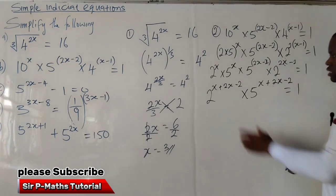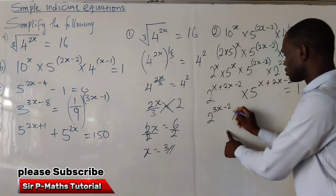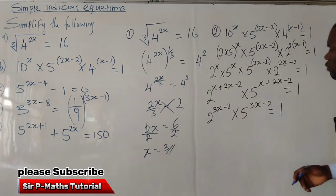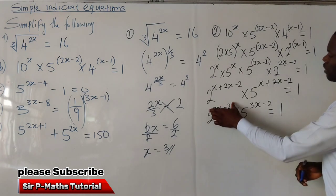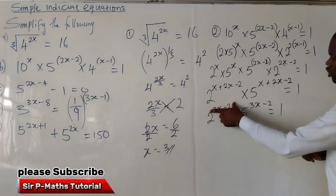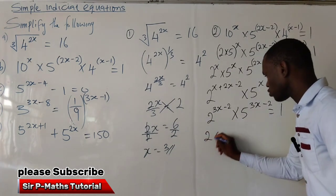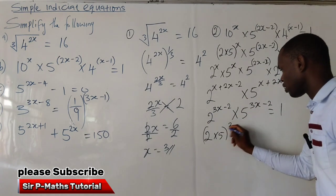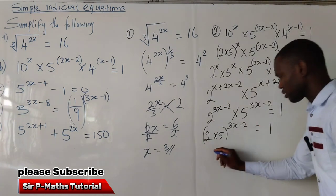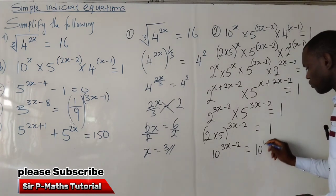This is equal to 1. Adding the powers of 2: x plus 2x gives 3x, minus 1 — wait, let me correct: we get 2 raised to power 3x minus 2, and 5 raised to power 3x minus 2, equal to 1. Another law of indices says that when two bases are multiplying with equal powers, multiply the bases and factor out the common power. So 2 times 5 gives us 10 raised to power 3x minus 2.